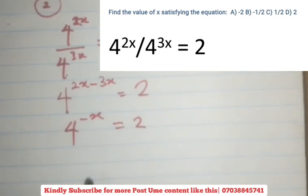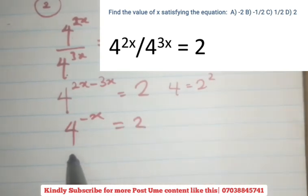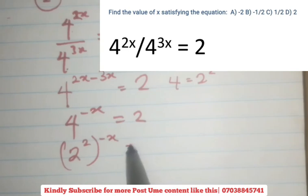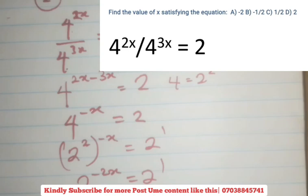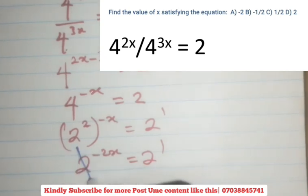So at this stage, all you have to do is break down both sides to be in the same base. You know that 4 is 2 to the power 2 already. So you're going to have 2 raised to the power 2, then you have minus x. And the outer part equals 2 to the power 1. Then from here, 2 times minus x will give you 2 to the power minus 2x equals to 2 to the power 1.